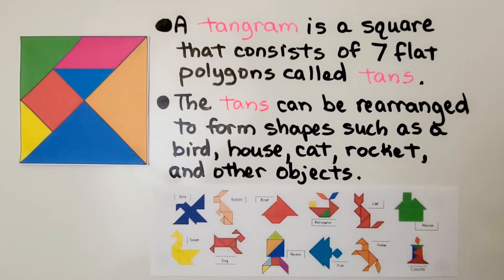A tangram is a square that consists of seven flat polygons called tans. The tans can be rearranged to form shapes such as a bird, a house, cat, rocket, and other objects.